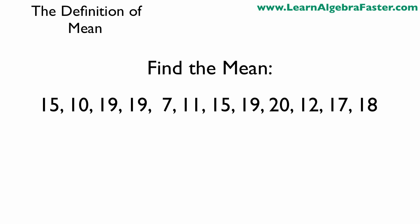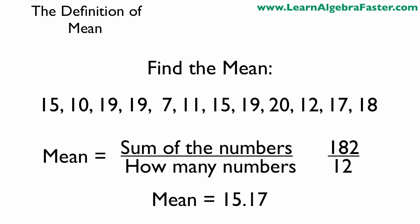The problem is we're going to have to do some calculation to find the mean. The mean is the sum of all those numbers, and they add to 182. Then we count how many numbers there are in that data set — there are 12 individual numbers. When we divide 182 by 12, we get a mean of 15.17.